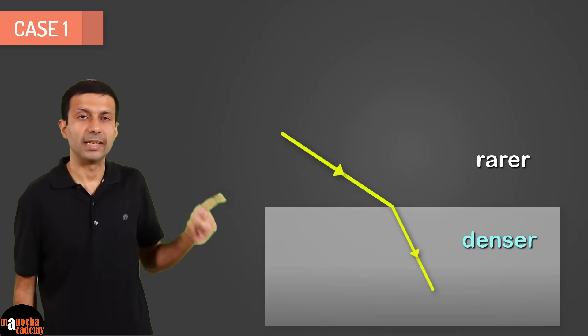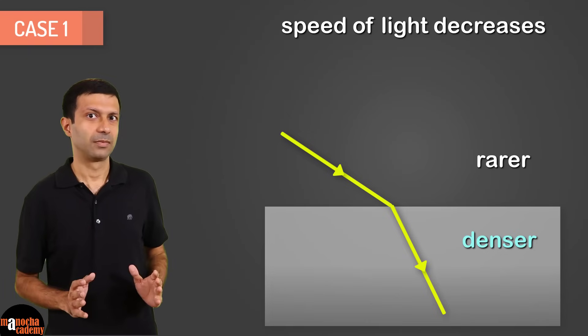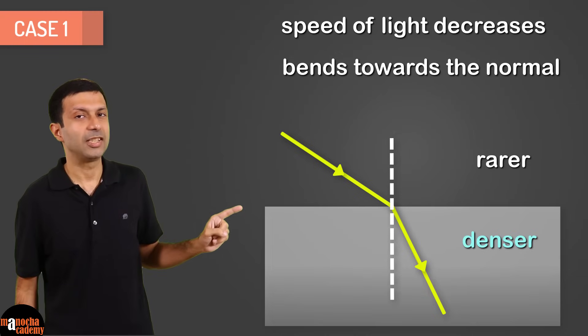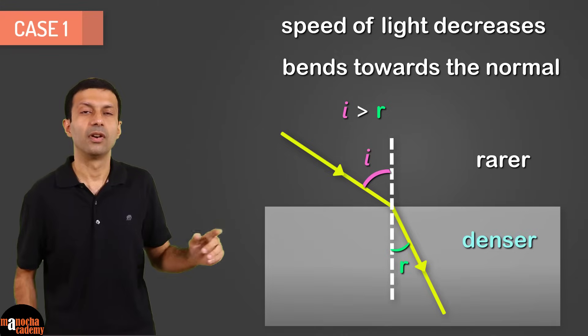So this was our case one. When light travels from a rarer to a denser medium, the speed of light decreases. The light bends towards the normal. And as you can see, angle of incidence is greater than the angle of refraction.